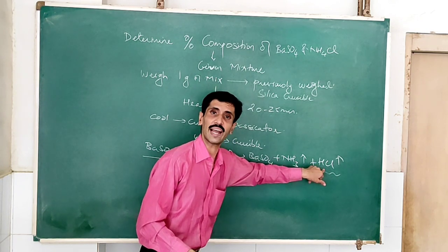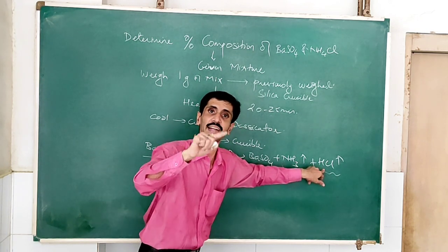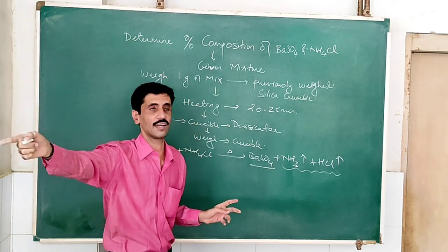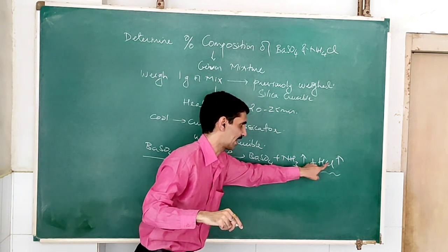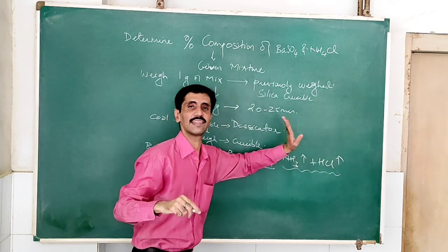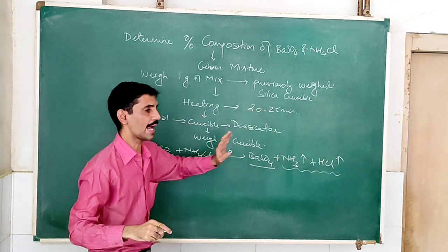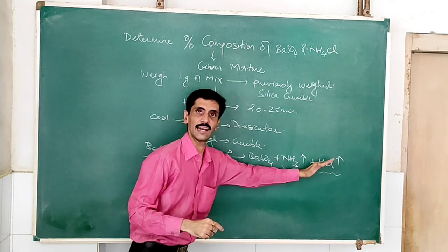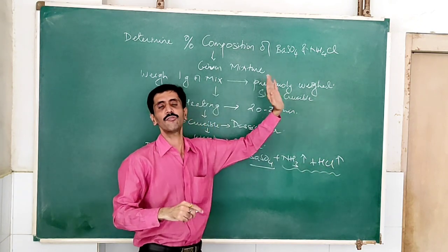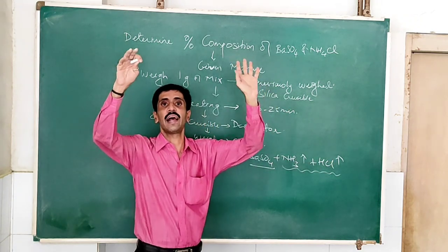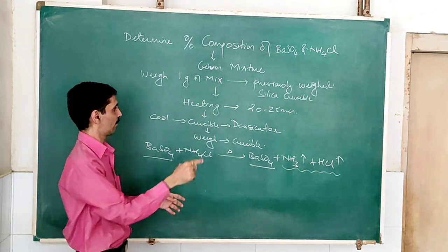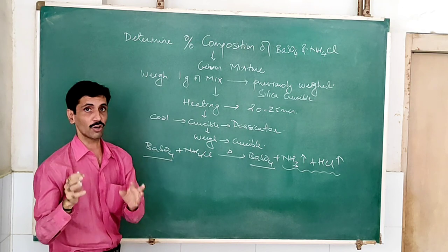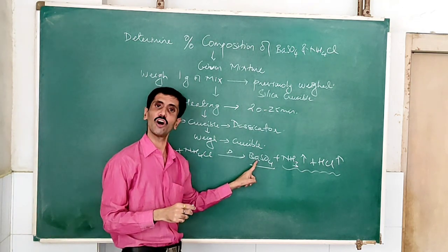Don't call this hydrochloric acid — it is hydrogen chloride gas. When it is dissolved in water, then it becomes hydrochloric acid. But here this is hydrogen chloride gas and it is volatile. So during the heating process, this ammonia and HCl are going to be volatile — they get evaporated. And as a result, when you cool the crucible in the desiccator and weigh it, that weight corresponds to BaSO₄ only.